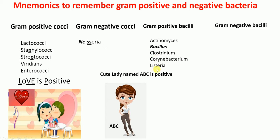How will you know this list refers to bacilli? Because in this list we have 'Bacillus' itself. So the mnemonic for gram-positive bacilli is 'Cute Lady named ABC is Positive' — C for Clostridium or Corynebacterium, L for Listeria, A for Actinomyces, B for Bacillus, C again for Clostridium or Corynebacterium, and Positive for gram-positive bacilli. Now we're done with gram-positive bacilli.